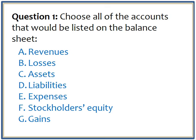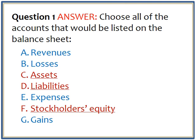The first question: choose all of the accounts that would be listed on the balance sheet. The choices are revenues, losses, assets, liabilities, expenses, stockholders' equity, and gains. Assets, liabilities, and stockholders' equity are the types of accounts on the balance sheet, because it is a representation of the accounting equation: assets equal liabilities plus equity. All the other accounts listed — revenues, losses, expenses, and gains — are found on the income statement.